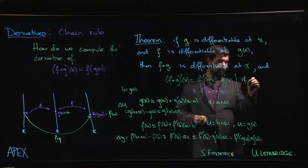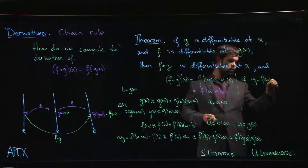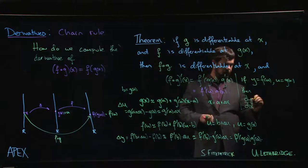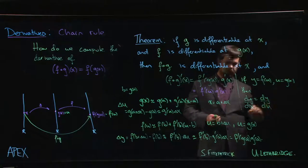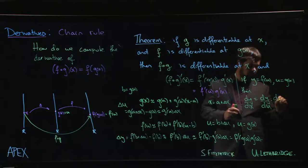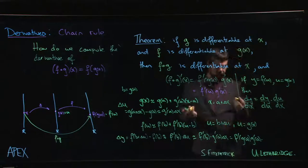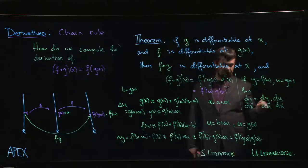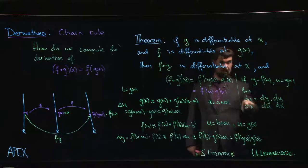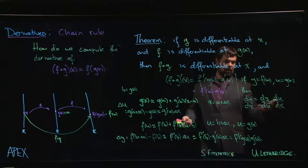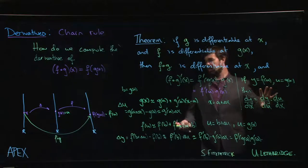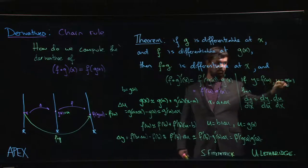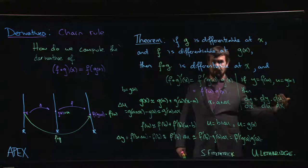Another way to think about this is Leibniz notation. If y = f(u) where u = g(x), then we can write dy/dx as dy/du times du/dx. That's how the chain rule looks in Leibniz notation. You shouldn't think of these as fractions, but if you do, a fun thing happens: the du's cancel and you get back dy/dx. Some people find that helps them remember. If you find yourself getting the chain rule wrong, it's not a bad idea to introduce the intermediate variable u and break it down — it's not necessary, but some people find it helps.